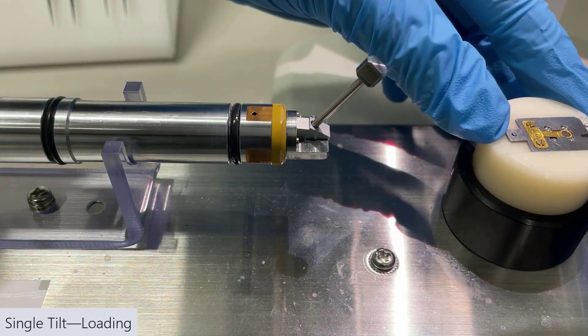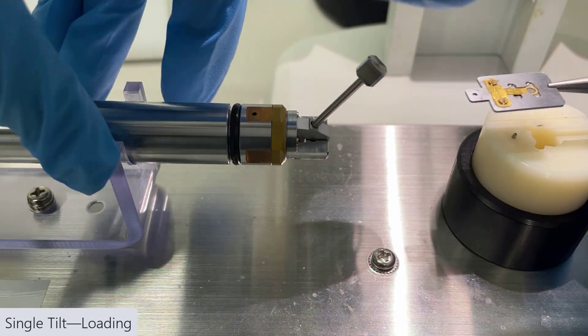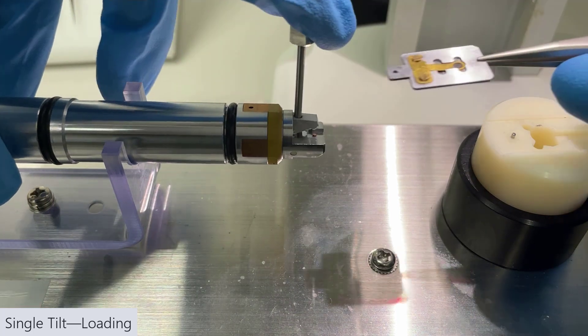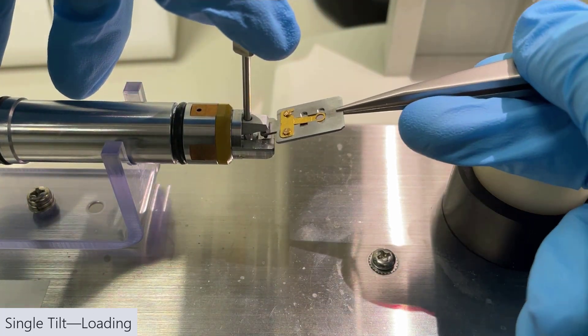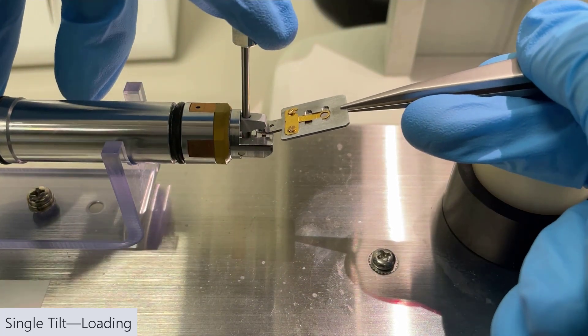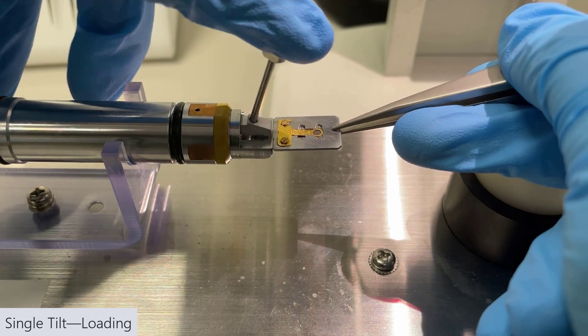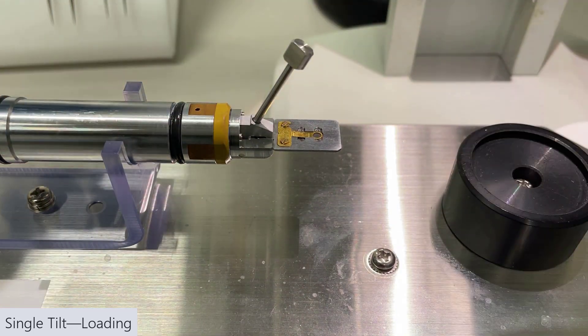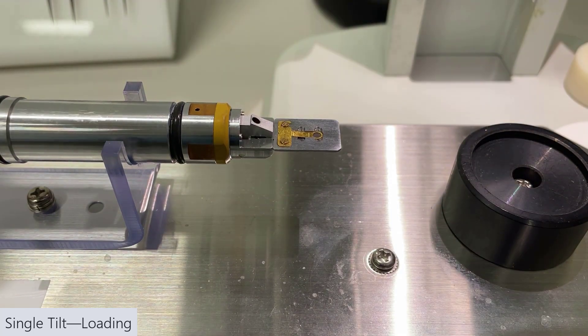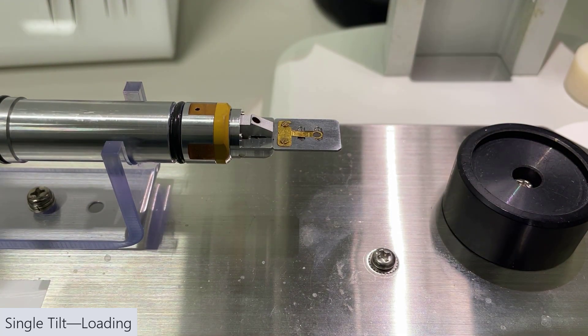Now you do want to be wearing gloves when you're doing this because you're touching the sample rod. We just want that hole to fit in the pin nicely, and then we just drop the lever. Now we want to make sure that it is grasping it, so I'm just tugging on it.